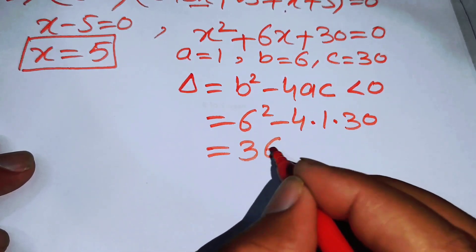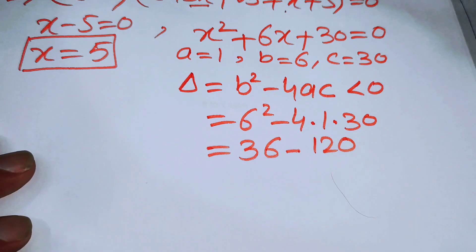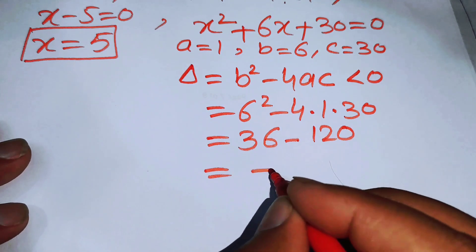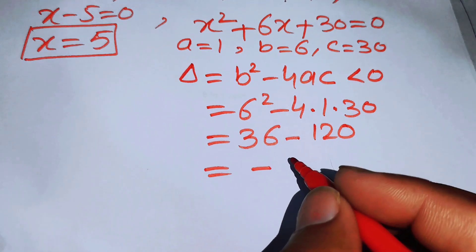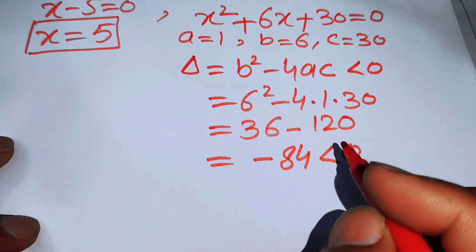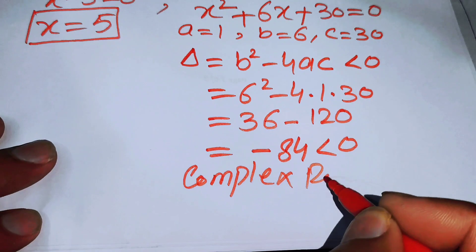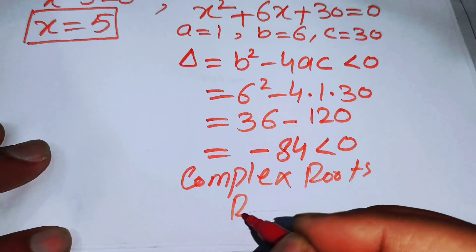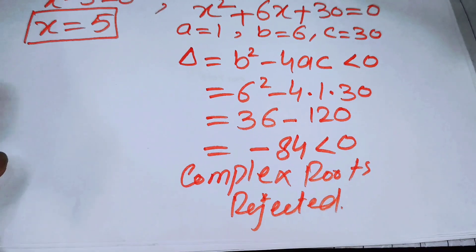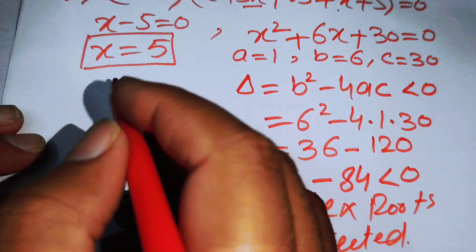So delta equals 36 minus 120, which equals minus 84. Since delta is less than 0, the quadratic has complex roots. Because we only need real roots, we reject these complex roots.